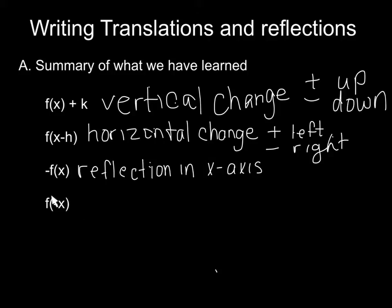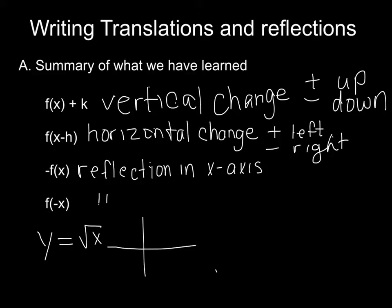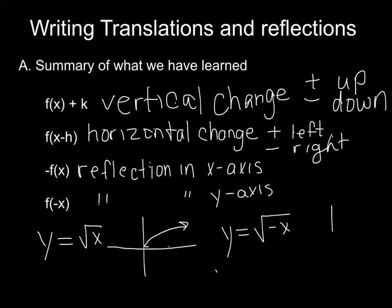We haven't looked at this one yet: what happens if we make x negative on the inside? The prediction is a reflection on the y-axis. Let's check in the calculator. Plug in the square root of x — it looks like a half-curve. Now graph the square root of negative x. That's a reflection in the y-axis — confirmed.